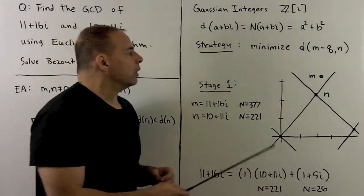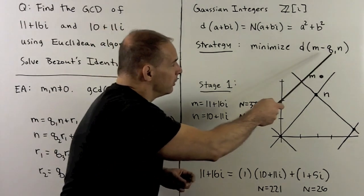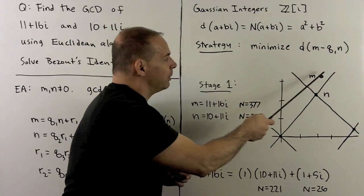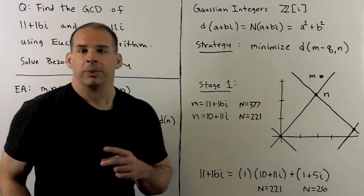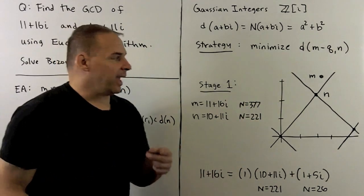What's happening here? Well, if we take n, plot n, plot m. If I let q range over all Gaussian integers, we're going to form the lattice generated by n.